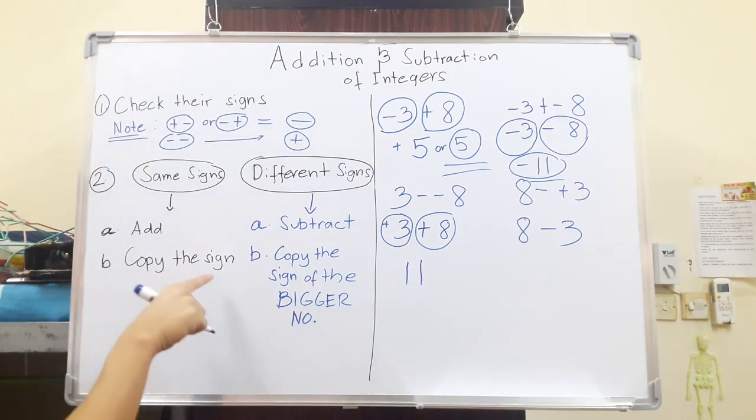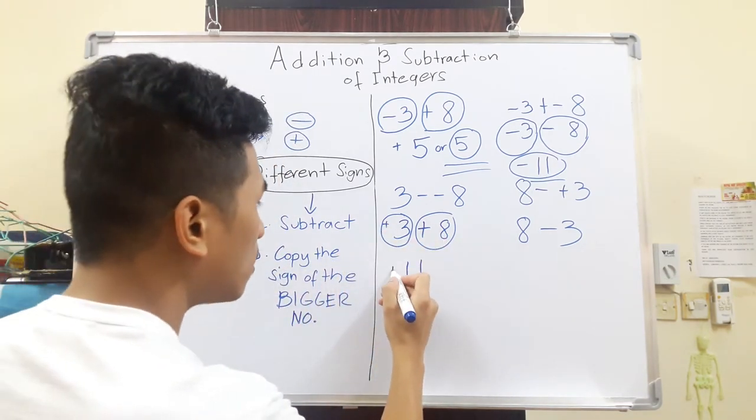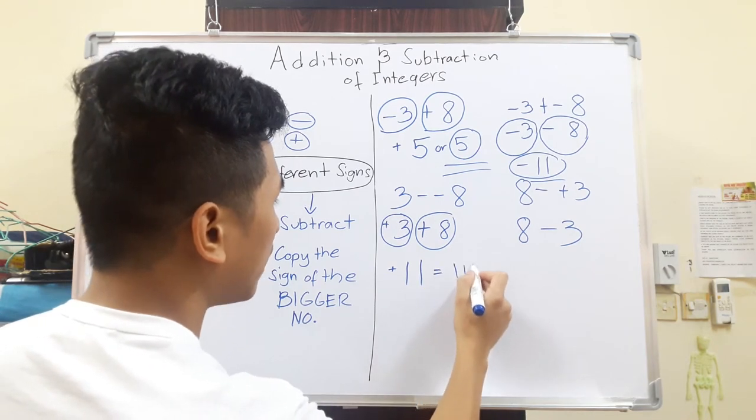And then, letter B, copy the sign. So they are both positive. So it's just positive 11 or just 11.